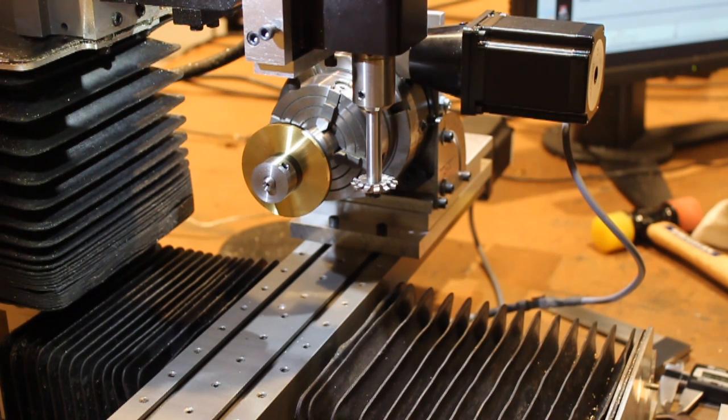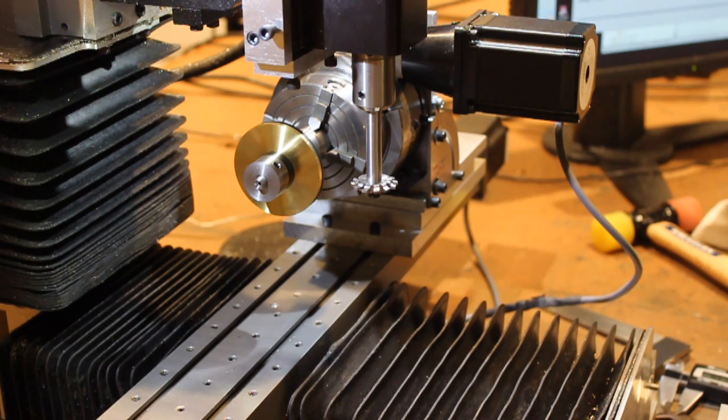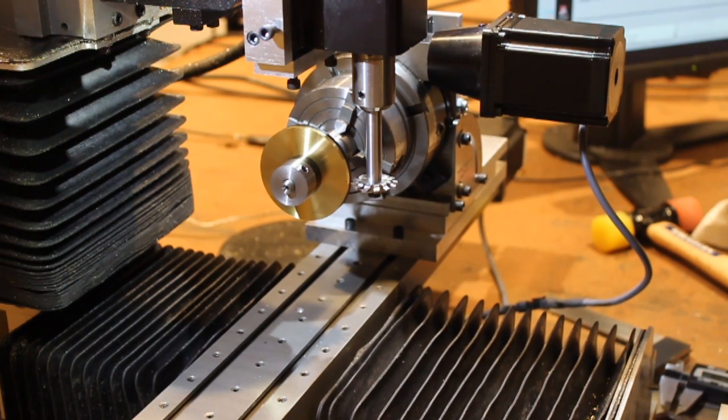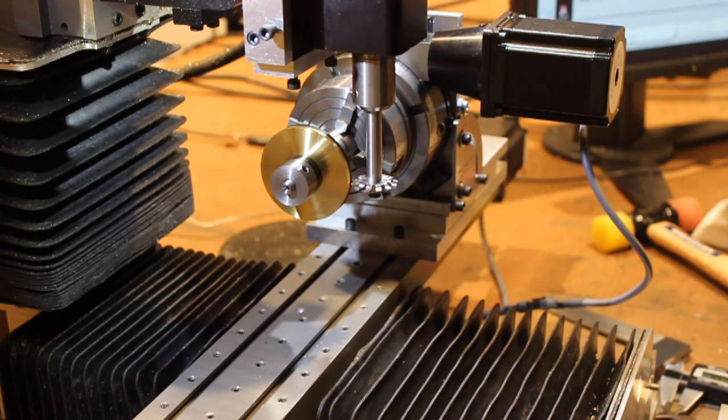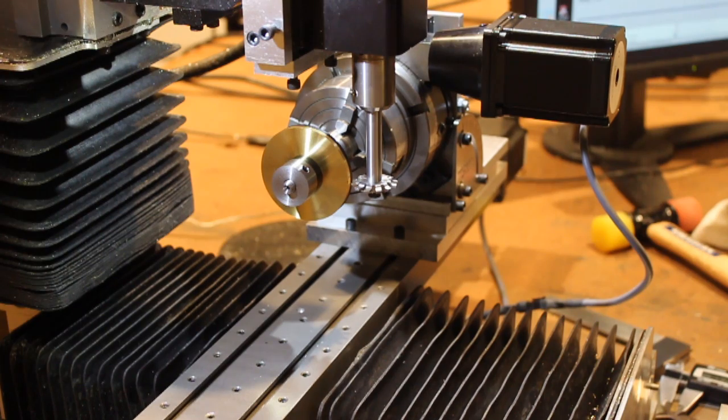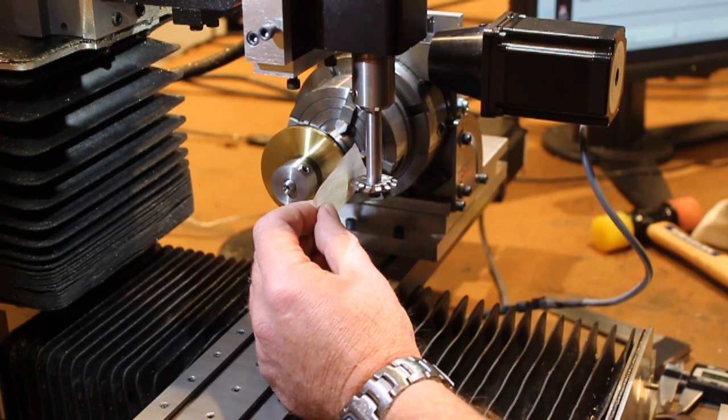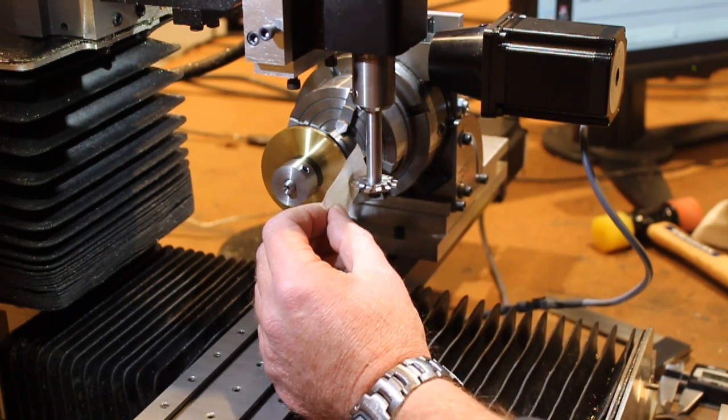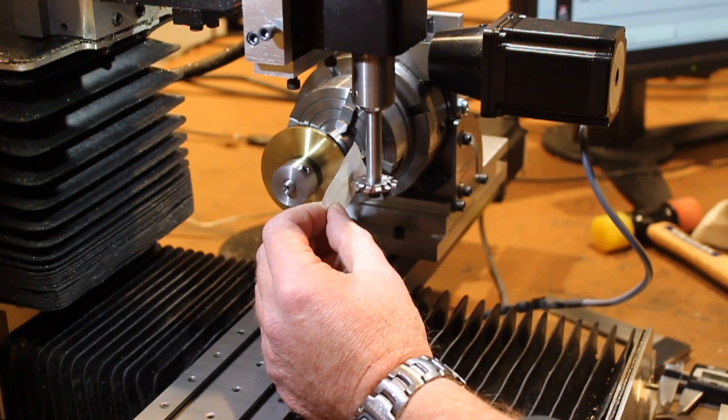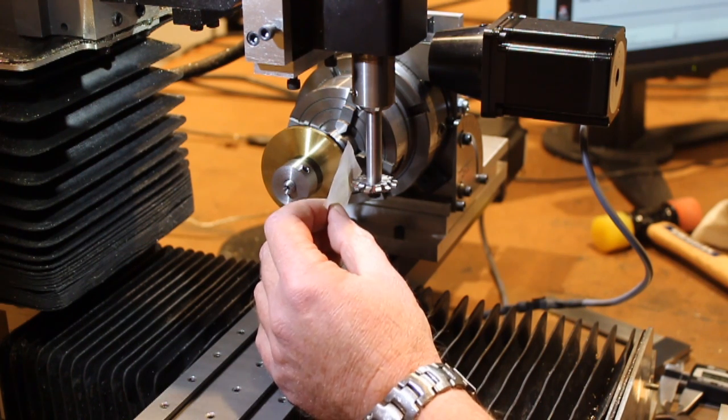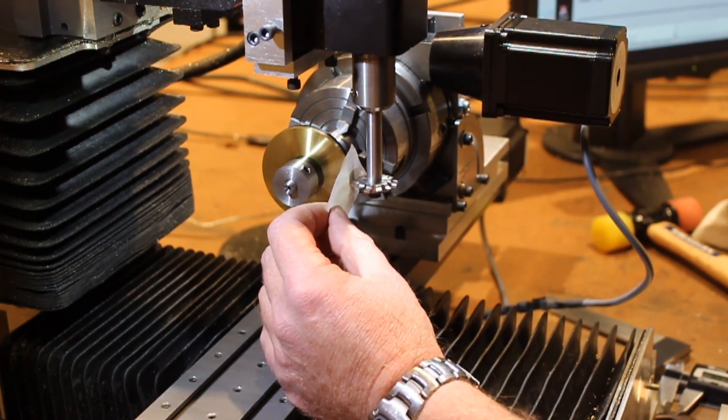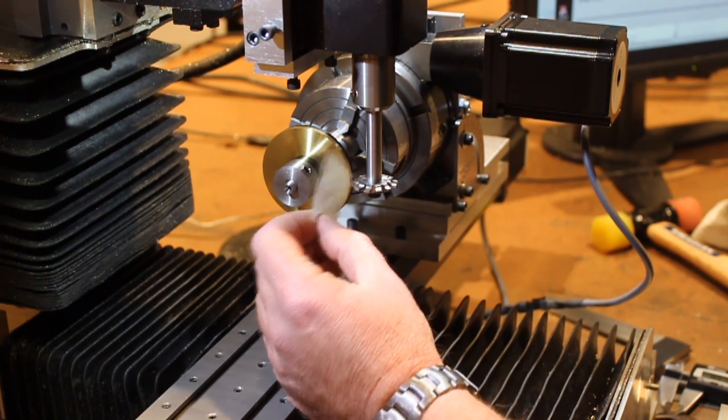So now it's just a matter of... How I'm doing this obviously has a lot to do with how I wrote the G-code to do this, but in my particular case, the way I wrote it, I need to know exactly where the cutter is in this direction.